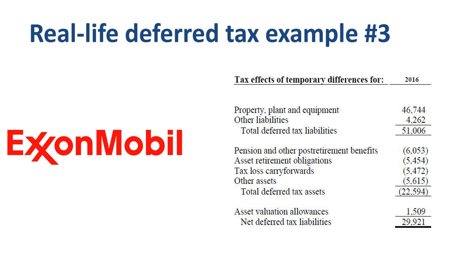At the end of 2016, ExxonMobil had almost $30 billion of net deferred tax liabilities. The deferred tax liabilities are mostly driven by temporary timing differences in the depreciation of property, plant and equipment. The main item in deferred tax assets is temporary timing differences in the way pension and other post-retirement benefits are handled for book versus tax purposes.